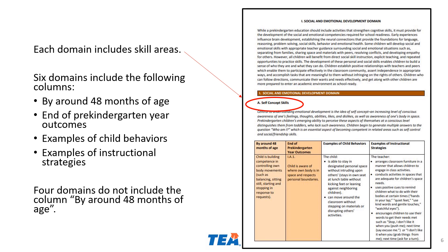There are six domains that include four columns. The first column, by around 48 months of age, contains the outcomes typically used in three-year-old Pre-K programs. The second column, end of Pre-Kindergarten year outcomes, contains the outcomes expected at the end of the Pre-Kindergarten year, and this is for four-year-old programs.